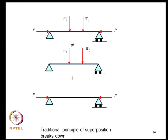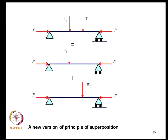Regarding the principle of superposition: if a beam carries loads W1, W2, and axial load P, we cannot simply sum the responses to W1 alone and W2 alone and add to the axial response. However, a modified version of superposition is applicable: solve the problem with P and W1 to get Y1, solve with P and W2 to get Y2, and then Y = Y1 + Y2 satisfies the combined problem. So a new version of the principle of superposition emerges that must be used.